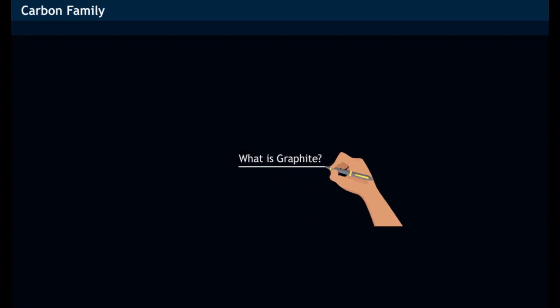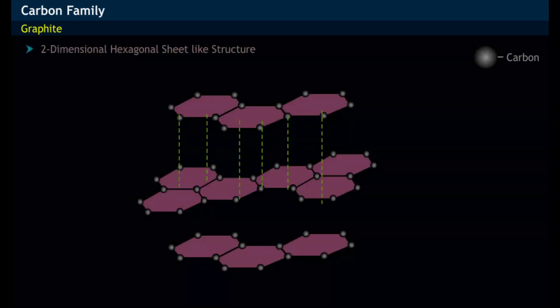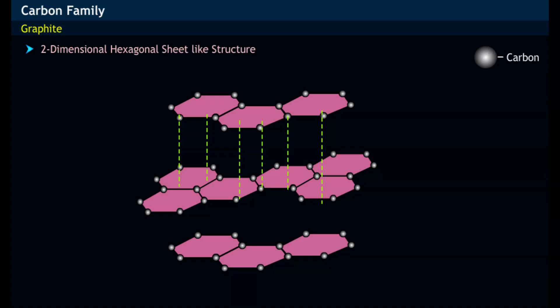What is graphite? Graphite is a two-dimensional sheet-like structure with each carbon atom bonded to three other carbon atoms via sigma bonds. The carbons in graphite are sp2 hybridized. In graphite, each layer consists of planar hexagonal carbon rings.